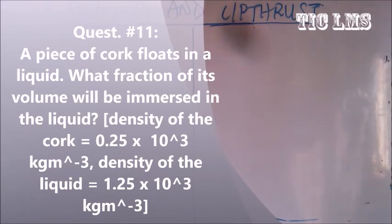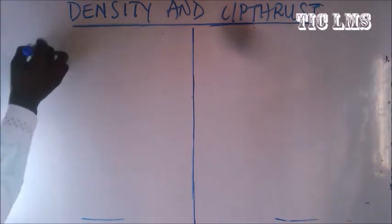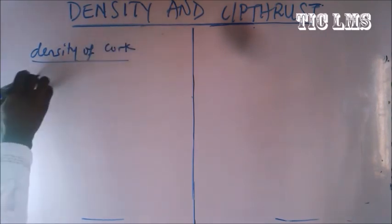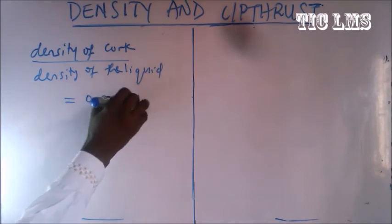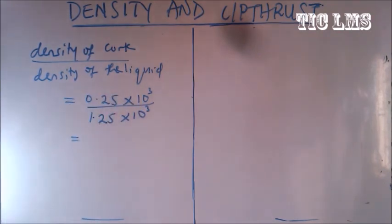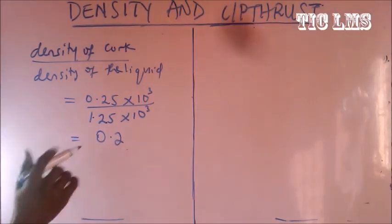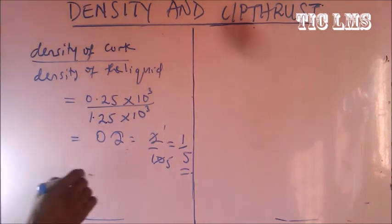The next question: a piece of cork floats in a liquid. What fraction of its volume will be immersed, given density of cork is 0.25 times 10 cubed kg/m³ and density of liquid is 1.25 times 10 cubed kg/m³? The fraction immersed equals density of cork over density of liquid, which is 0.25 times 10 cubed over 1.25 times 10 cubed equals 0.2, or 1 over 5 of its volume.